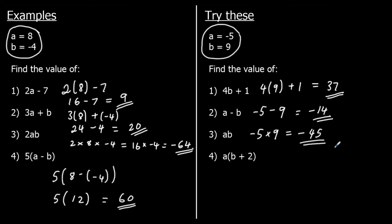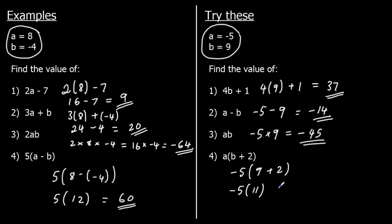And question 4: a times (b plus 2). So it's negative 5 times (9 plus 2). We do the bracket first, so 9 plus 2 is 11. So negative 5 times 11. A negative times a positive is negative, and 5 times 11 are 55, so the answer is negative 55.